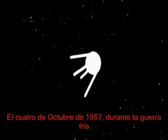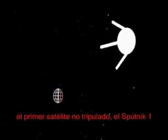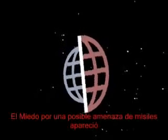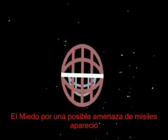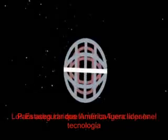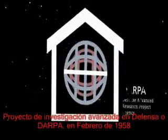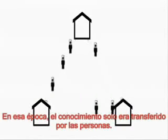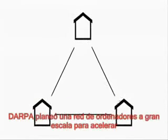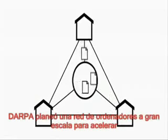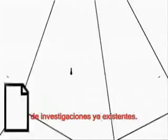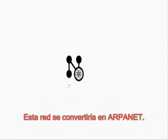On October 4th, 1957, during the Cold War, the first unmanned satellite, Sputnik 1, was sent into orbit by the Soviet Union. The fear of a missile gap emerged. In order to secure America's leading technology, the US founded the Defense Advanced Research Project Agency in February 1958. At that time, knowledge was only transferred by people. DARPA planned a large-scale computer network in order to accelerate knowledge transfer and avoid the doubling up of already existing research. This network would become the ARPANET.